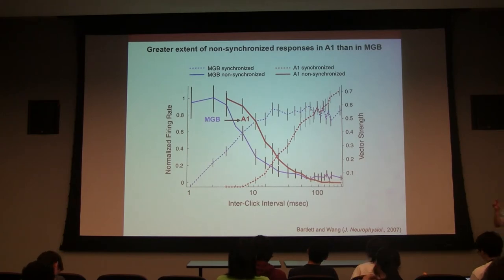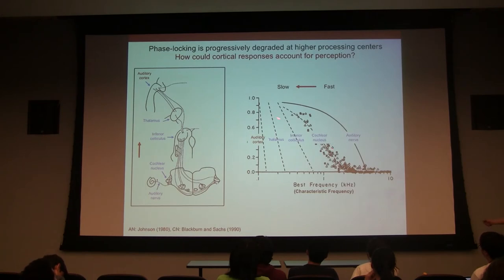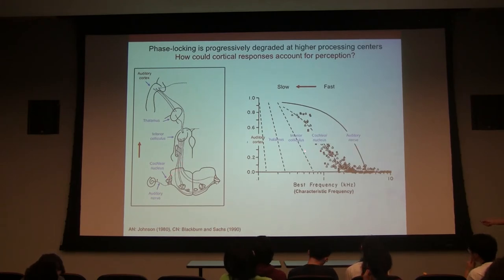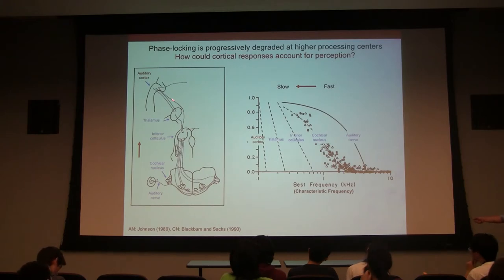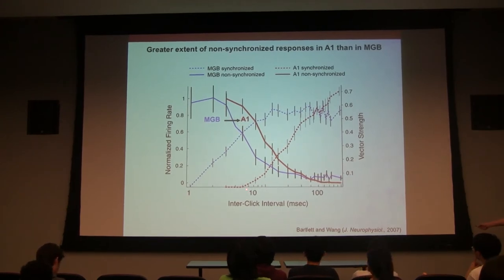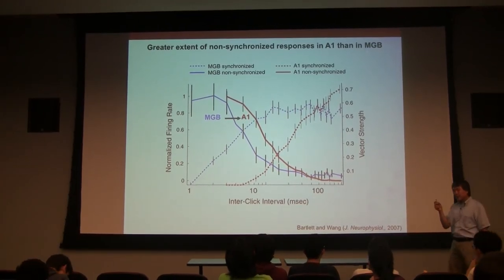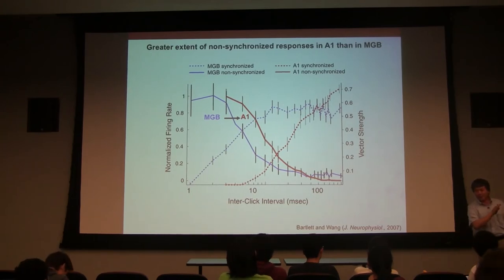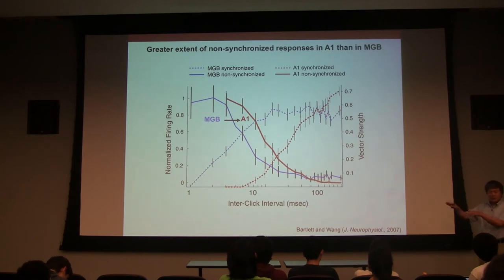This shows that synchronization change is progressive from peripheral to cortex. The synchronization is best in the auditory nerve, and becomes less and less as you move along the ascending pathway. The non-synchronized population increases from thalamus to cortex. The two populations cross at about 20-30 milliseconds in cortex, but only a few milliseconds in thalamus — a progressive transformation.